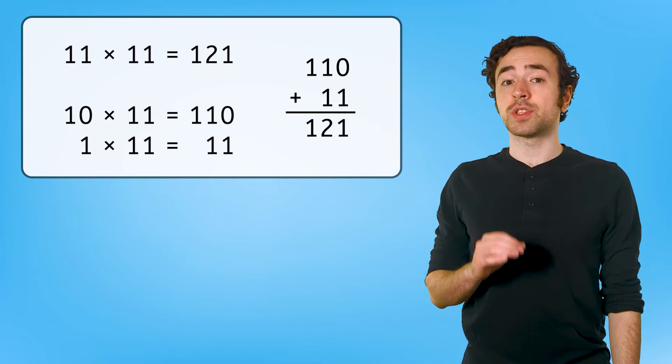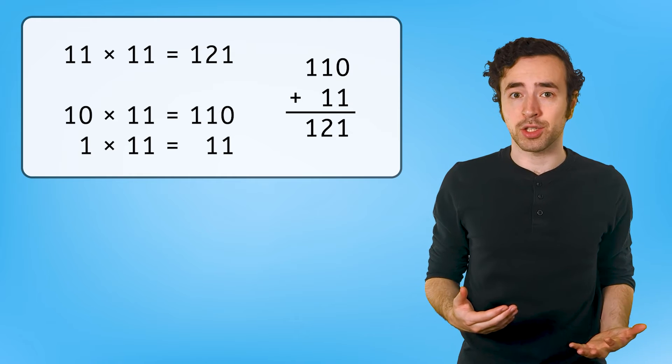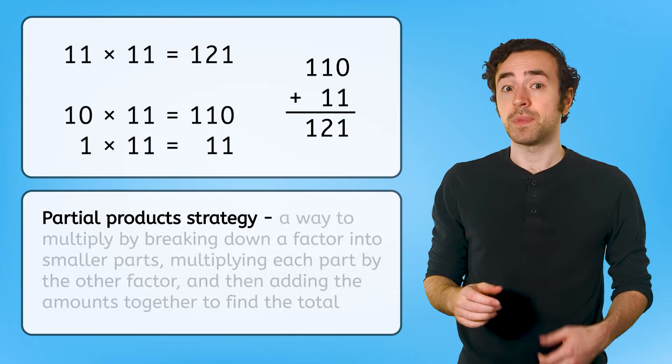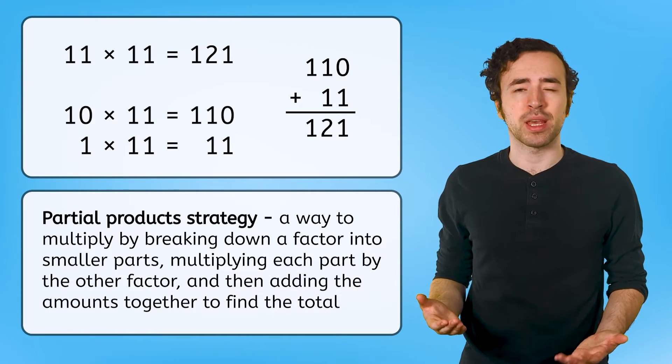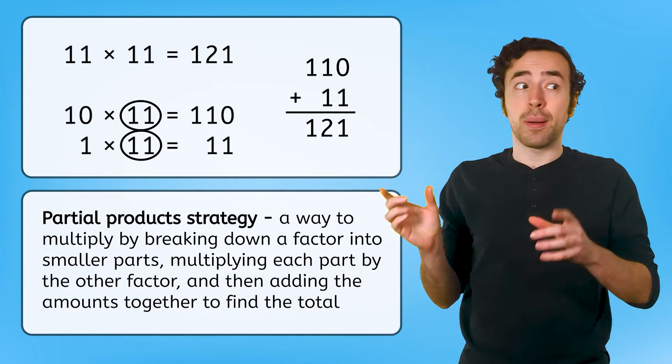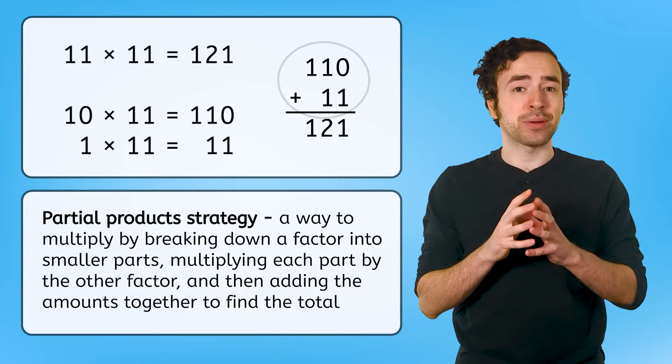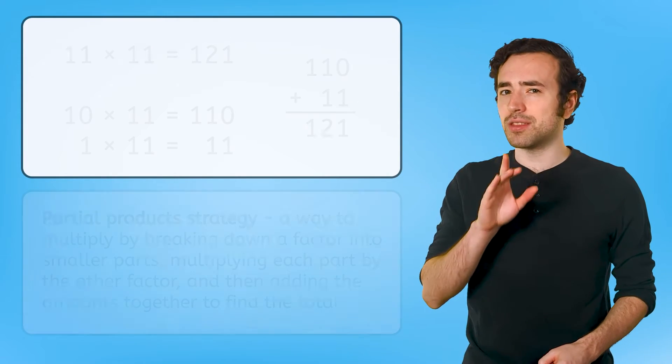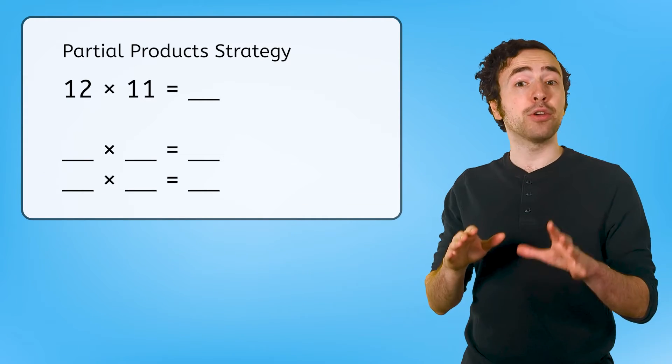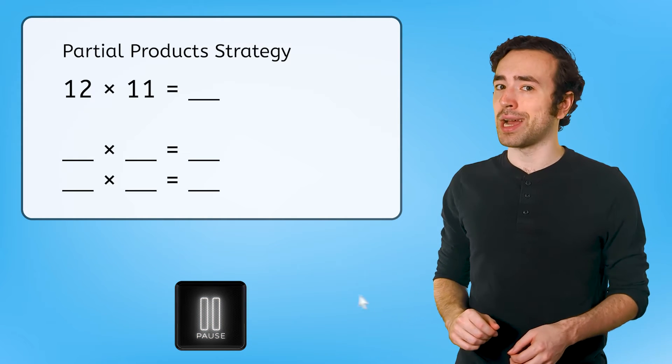This process of solving two smaller multiplication problems to help figure out the answer to a bigger multiplication problem is known as the partial product strategy. It's a way to solve more complex multiplication problems by breaking down a factor into smaller parts, multiplying each part by the other factor, and then adding those amounts together to find the total. Try using the partial product strategy to solve 12 times 11. Think about how you'll break 12 into smaller parts to solve and record your thinking in your guided notes.